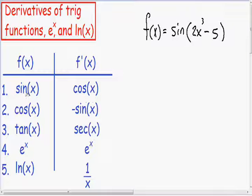And notice from our table, if we have an original function of sine, the derivative of the sine is going to be the cosine. So correspondingly, since we have a sine in our function, we have the sine of 2x cubed minus 5, our derivative is going to be the cosine of 2x cubed minus 5.